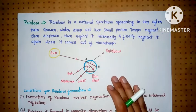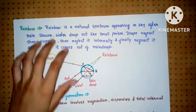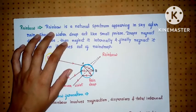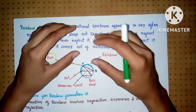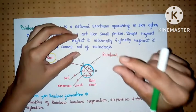Now we will study rainbow formation. We all know that rainbow is a natural spectrum appearing in the sky after rain showers. Water droplets in the sky act as small prisms.